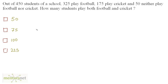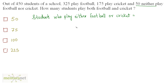Out of 450 students of a school, 325 play football, 175 play cricket, and 50 neither play football nor cricket. How many students play both football and cricket? It is given that 50 people neither play football nor cricket. So the students who play either football or cricket equals the total number of students minus the people who don't play — 450 minus 50 equals 400 students play at least one sport.